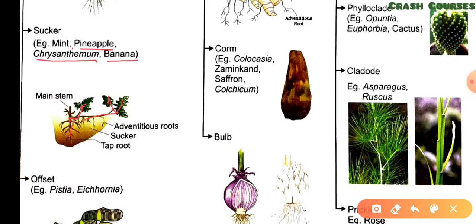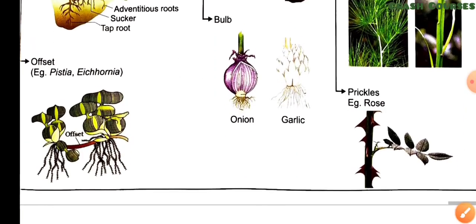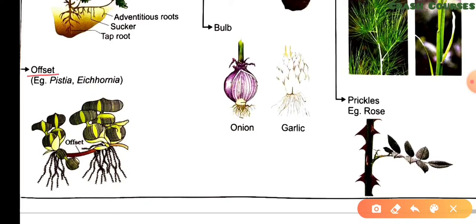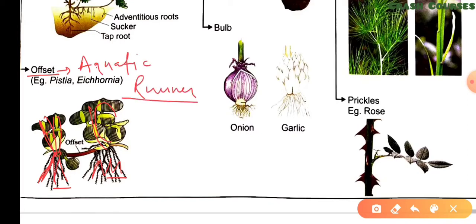Now coming to the next type, that is offset. In offset, each node bears a rosette of leaves in a circular cluster and below there are roots. Offsets are generally found in aquatic plants; the internodes of offsets are small and thicker. It is also known as aquatic runner because it is just like a runner but occurs in an aquatic ecosystem, while the runner occurs on the ground.